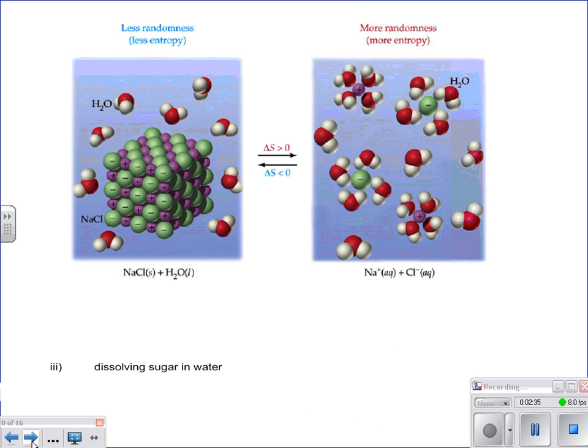So next question is, what about dissolving sugar in water? Well, if you're dissolving something that goes from a solid to an aqueous substance, it sounds to me like that's going to be more disordered. So therefore, our delta S is going to be a positive value.